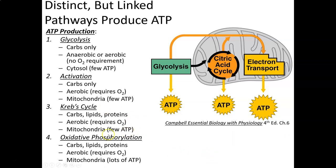To break down sugar, we do glycolysis. Glycolysis literally means sugar breakdown: glyco means carbohydrate, lysis means break apart. Glycolysis only occurs with carbohydrates, although we can convert some fuel sources to carbohydrates and then use glycolysis with them. It can be anaerobic, meaning no oxygen requirement, or aerobic, where we produce significantly more ATP. Glycolysis happens in the cytosol.